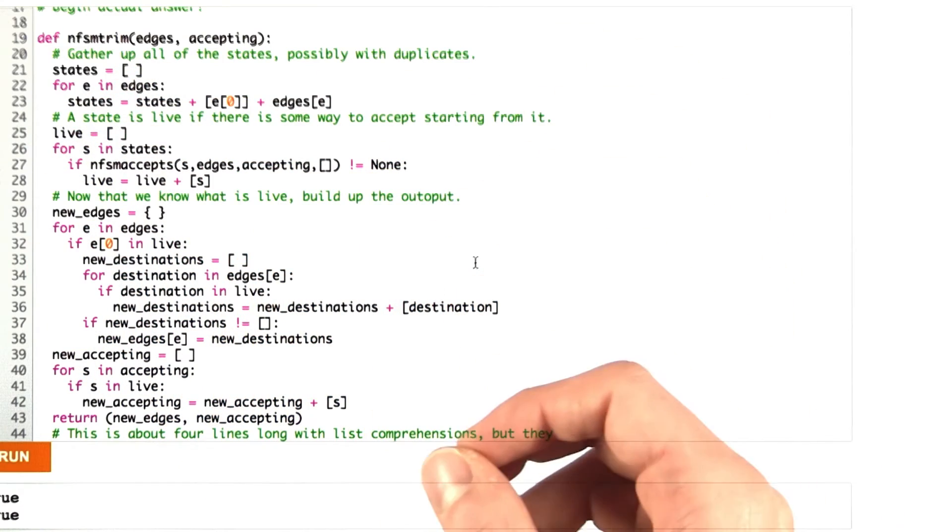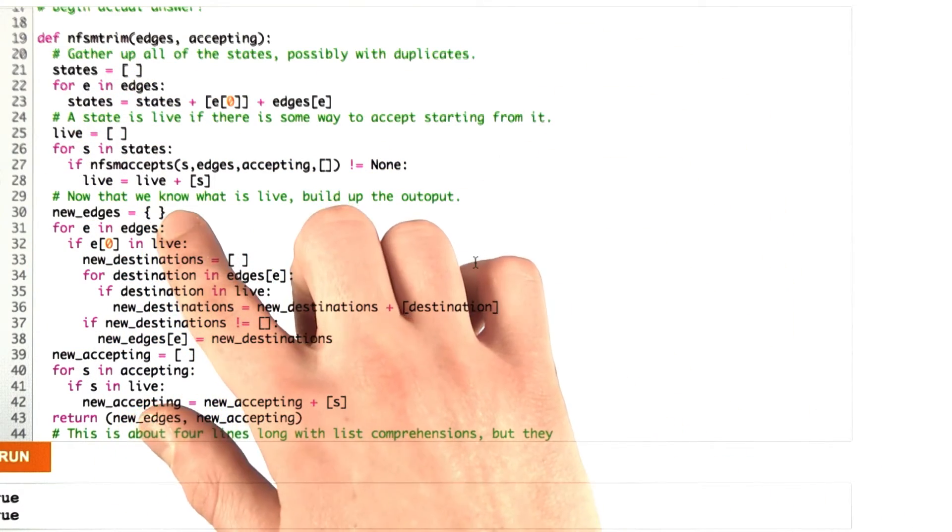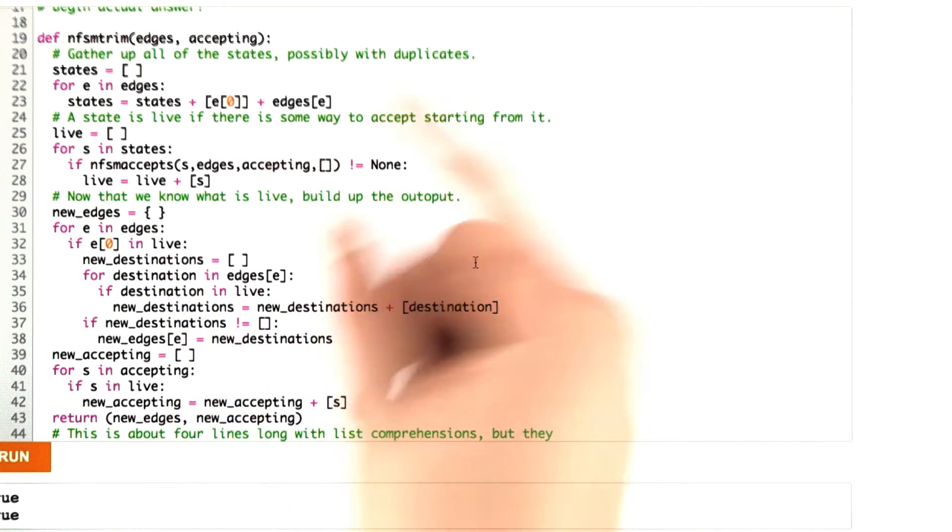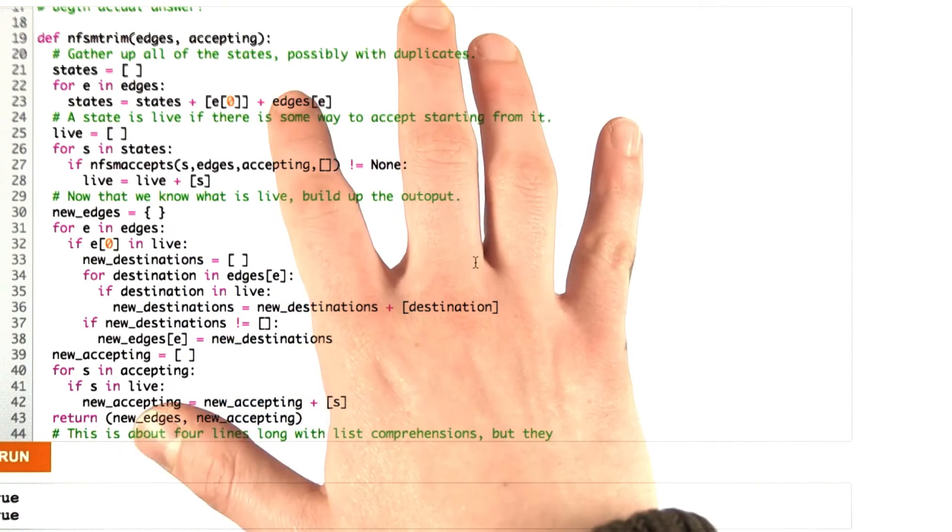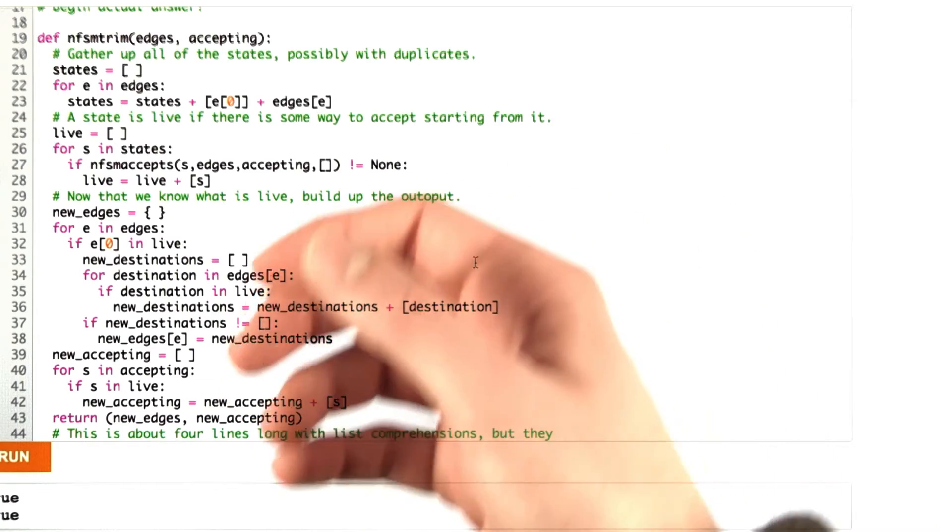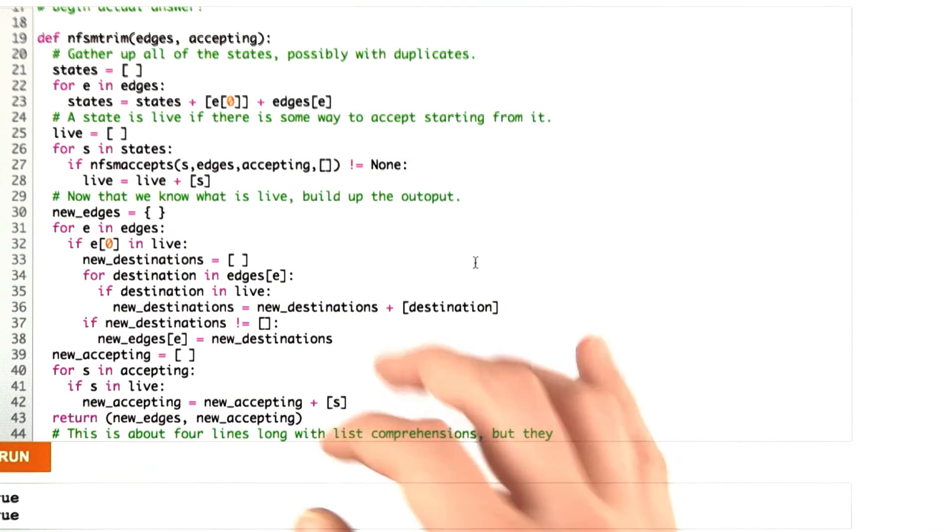I'm going to add it to a list of live states. Now I'm going to create a new dictionary of edges, my new representation, and go through all the old ones to see if they're still live and update them accordingly.